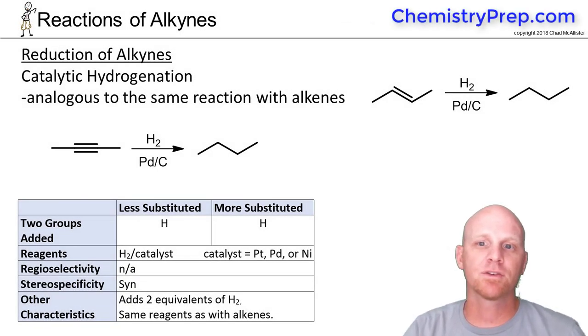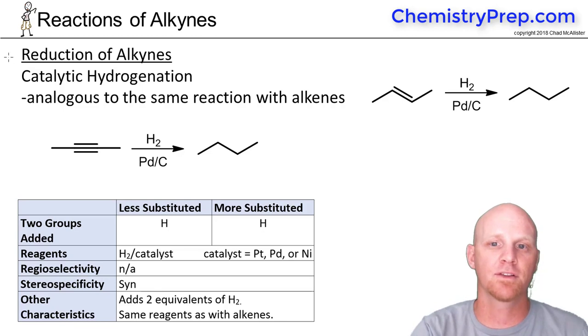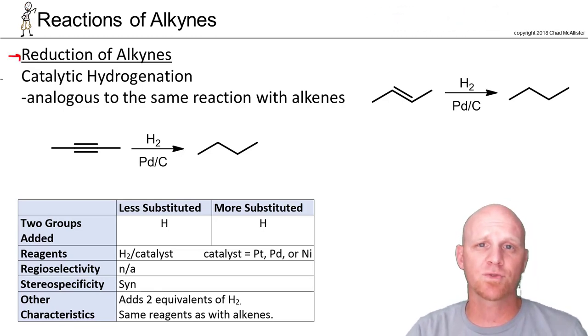Now let's take a look at the reactions of alkynes, starting with the reduction of alkynes. Many of the reactions for alkynes are analogous to what we saw with alkenes. The big difference here is that we've got two pi bonds, not just one, so you might have to worry about the reaction happening two times, not just once.